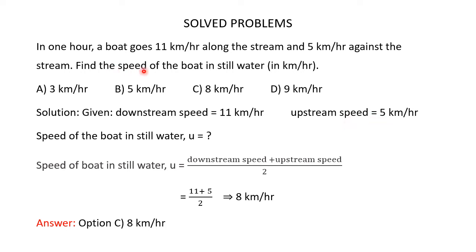So the upstream speed of the boat is 5 kmph, and we are asked to find the speed of the boat in still water. The formula is: speed of the boat in still water equals downstream speed plus upstream speed divided by 2. Substituting, we get 11 plus 5 divided by 2, which is 8 kmph. So the speed of the boat in still water is 8 kmph. The correct answer is option C, 8 kmph.